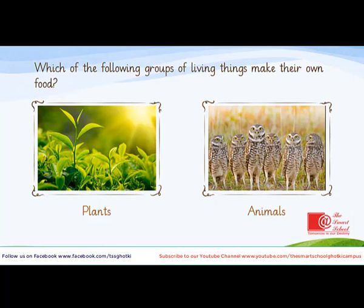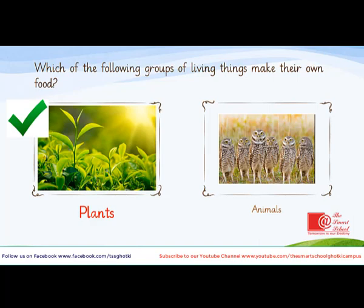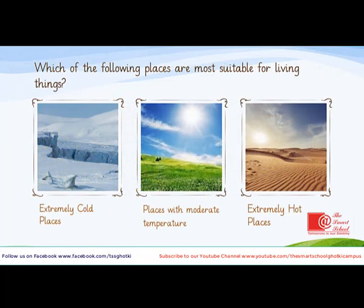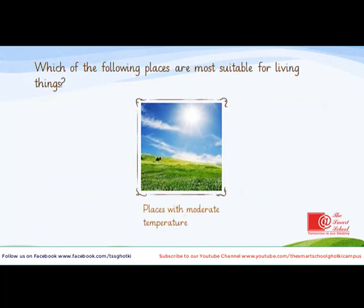Now we will assess what we have learned so far. Question one: which of the following groups of living things can make their own food — plants or animals? The correct answer is plants. Question two: which of the following places are most suitable for living things — extremely cold places, places with moderate temperature, or extremely hot places? The correct answer is places with moderate temperature.